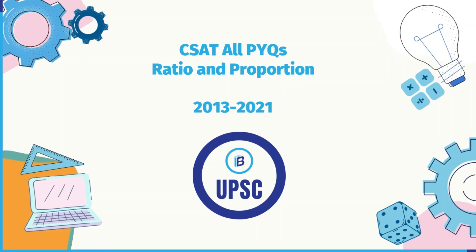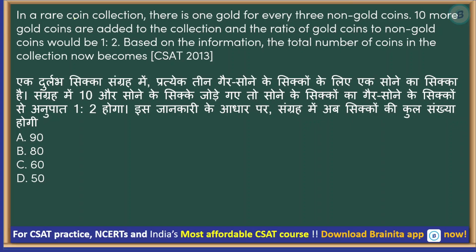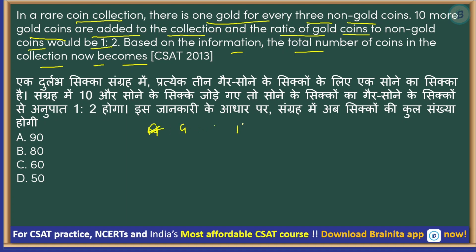Let us start. In a rare coin collection, there is one gold coin for every three non-gold coins. Ten more gold coins are added to the collection, and the ratio of gold coins to non-gold coins would become 1:2. Based on this information, the total number of coins in the collection now becomes — let us say G is gold and NG is non-gold.